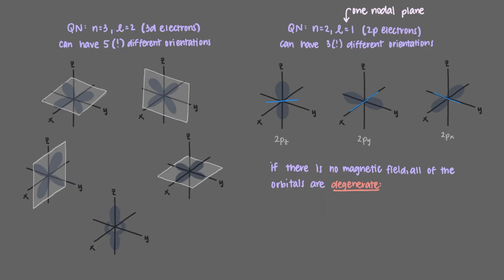As long as there is no magnetic field, because who walks around with a magnetic field anyway, then all three of these orbitals are degenerate, which means that they have the same energy.